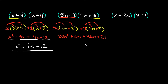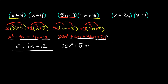Now checking to see if we can combine any like terms — normally it's these two middle terms. So 15n + 36n equals 51n. Bringing down the rest: 20n squared plus 51n plus 27. There's nothing left to combine, so your final answer is 20n squared + 51n + 27.